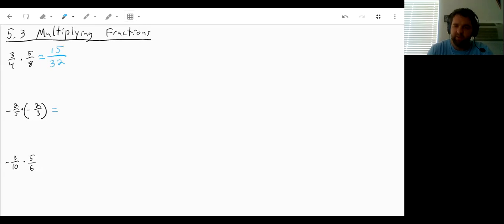Well first we have a negative number times another negative number means our answer will be positive. So if our answer is positive then we can just do 2 times 2 which will give us a 4 on top and 5 times 3 which will give us a 15 on the bottom.